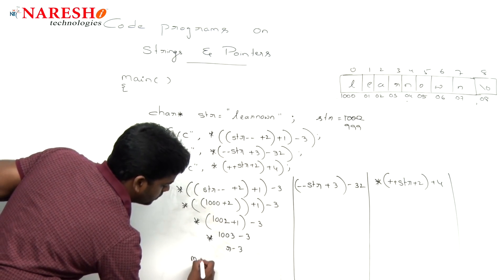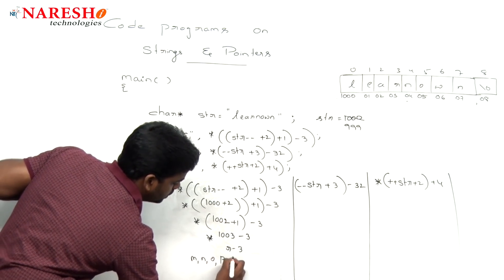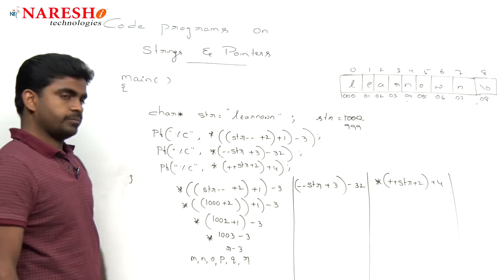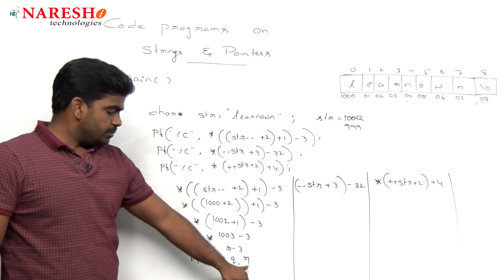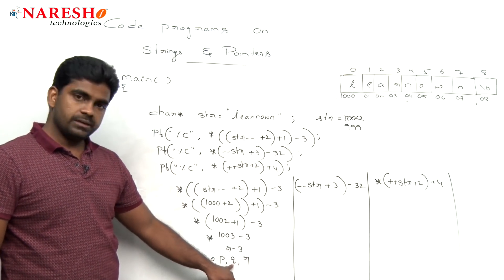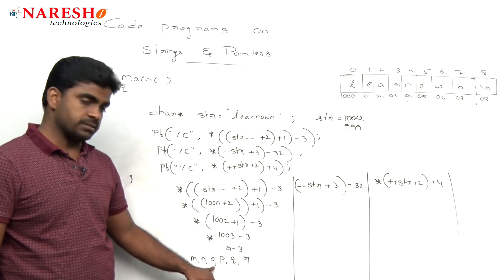For example, here it is M, N, O, P, Q, R. So minus 3 means what? This is minus 1, minus 2, and minus 3.